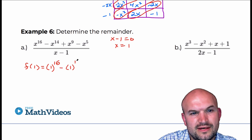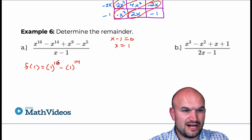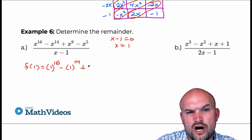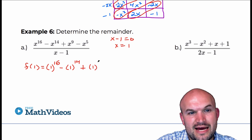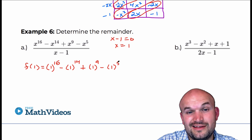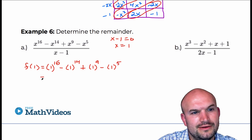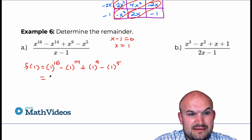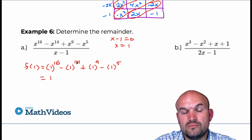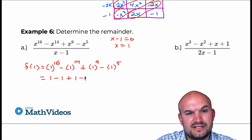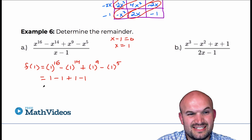The nice thing about this — and I should do an example with a negative number — because remember, it doesn't matter if it's raised to the 16th power or the 14th power. Any negative number raised to an even power is always going to be positive, and any negative number raised to an odd power is always going to be negative. So in this example, 1 raised to the 16th power is just 1, and 1 raised to the 14th power is just 1, but you're subtracting. So it's 1 minus 1, plus 1 raised to the 9th power which is plus 1, minus 1. So 1 minus 1 plus 1 minus 1 — you can see this actually gives you 0.